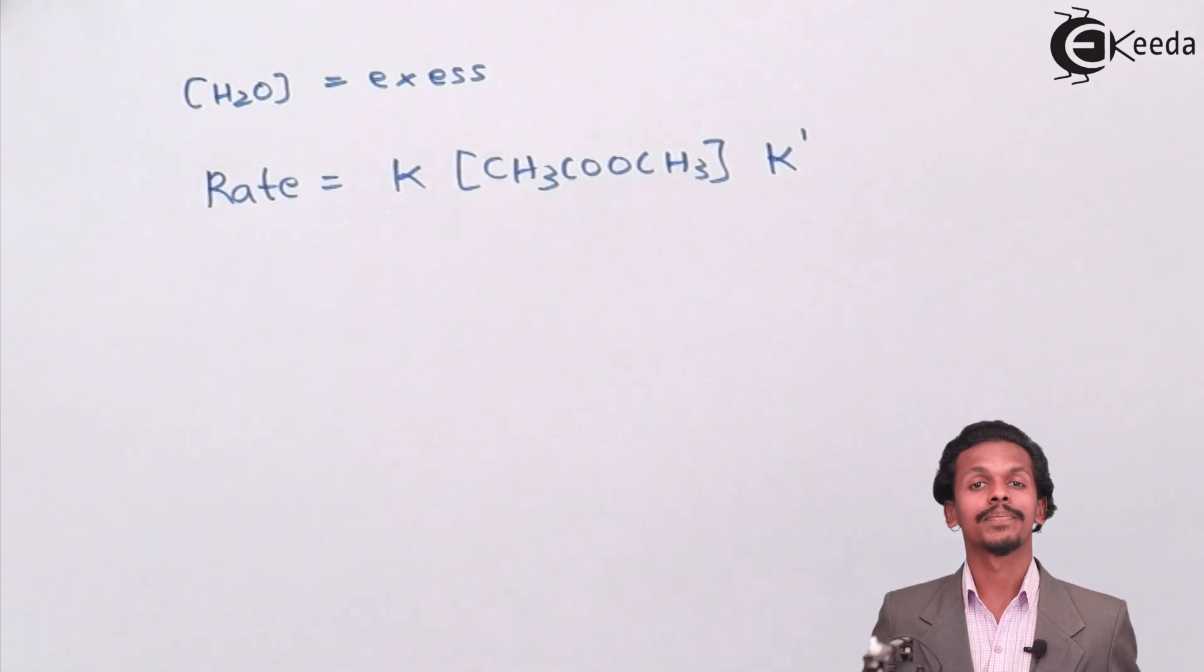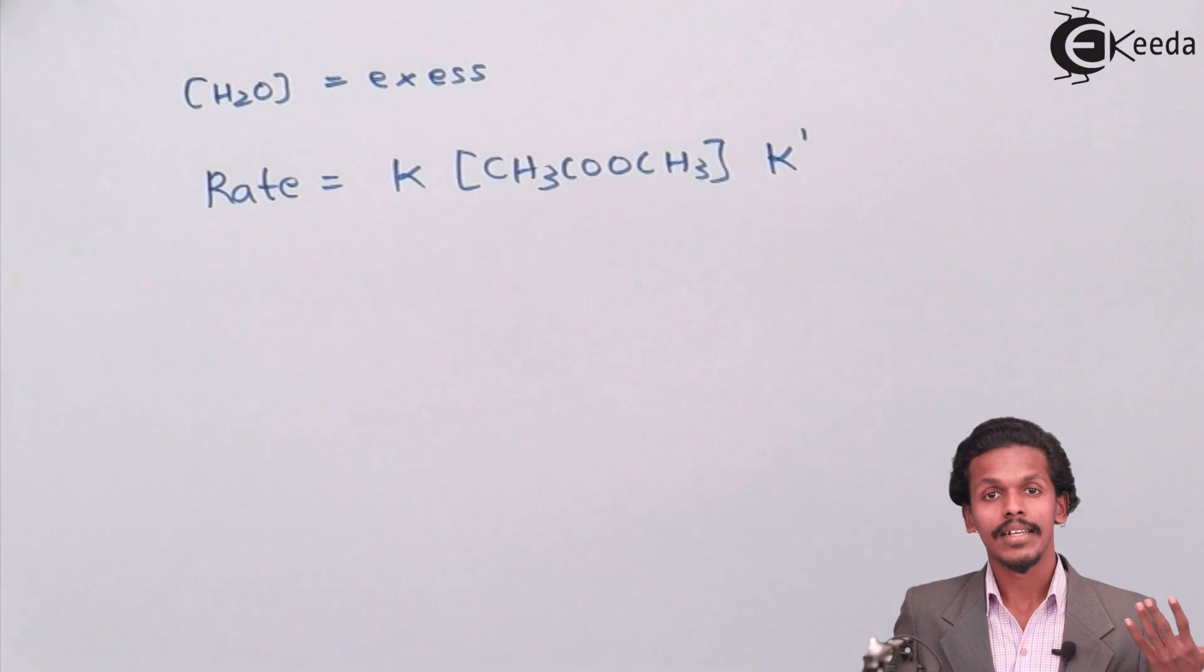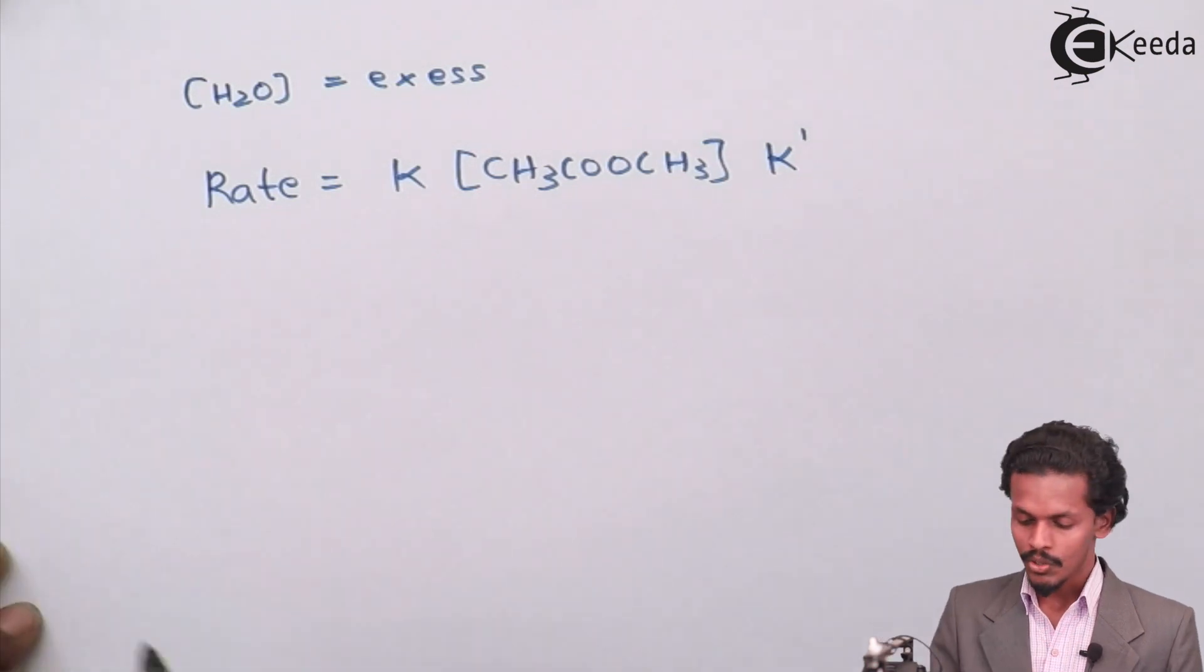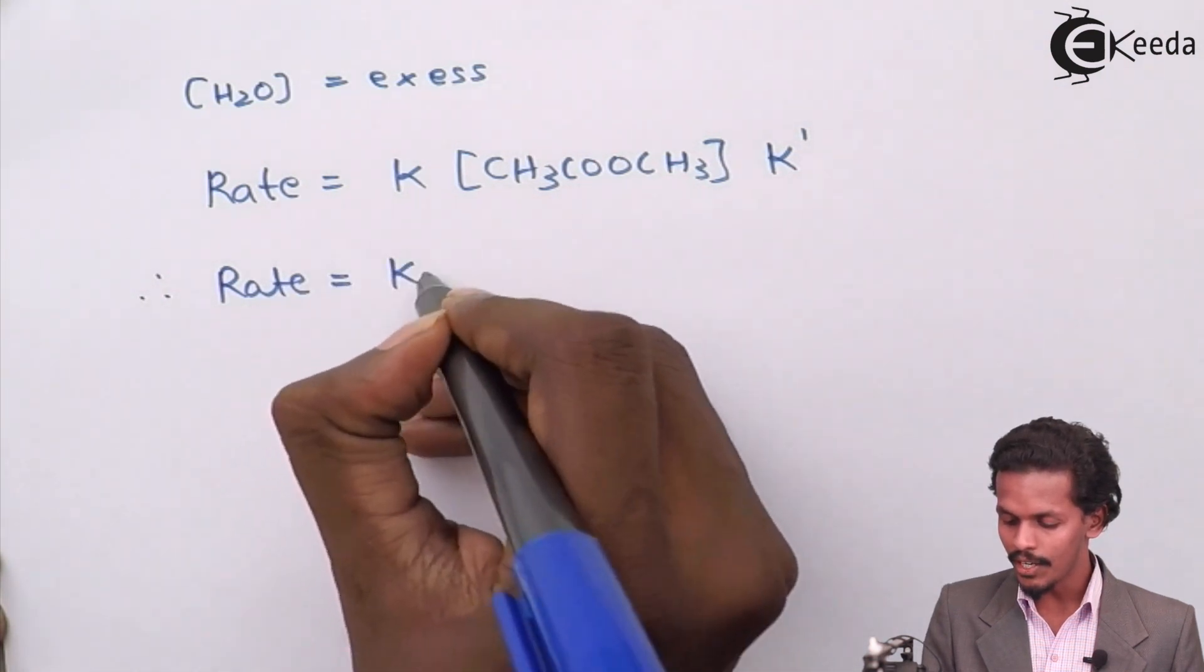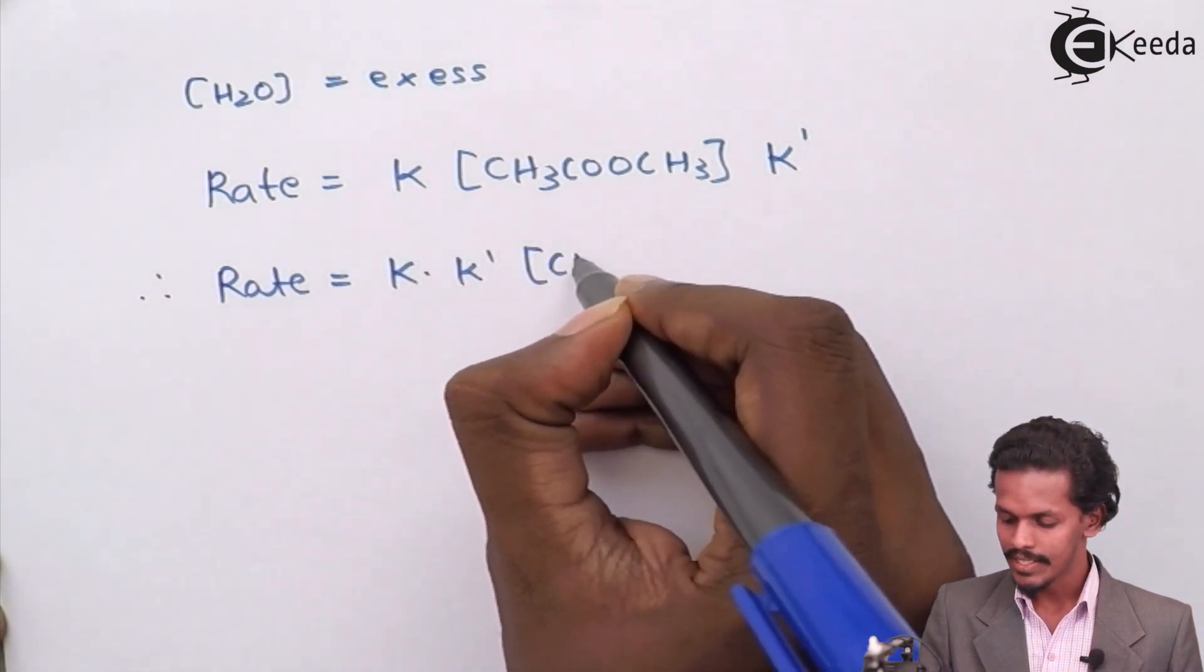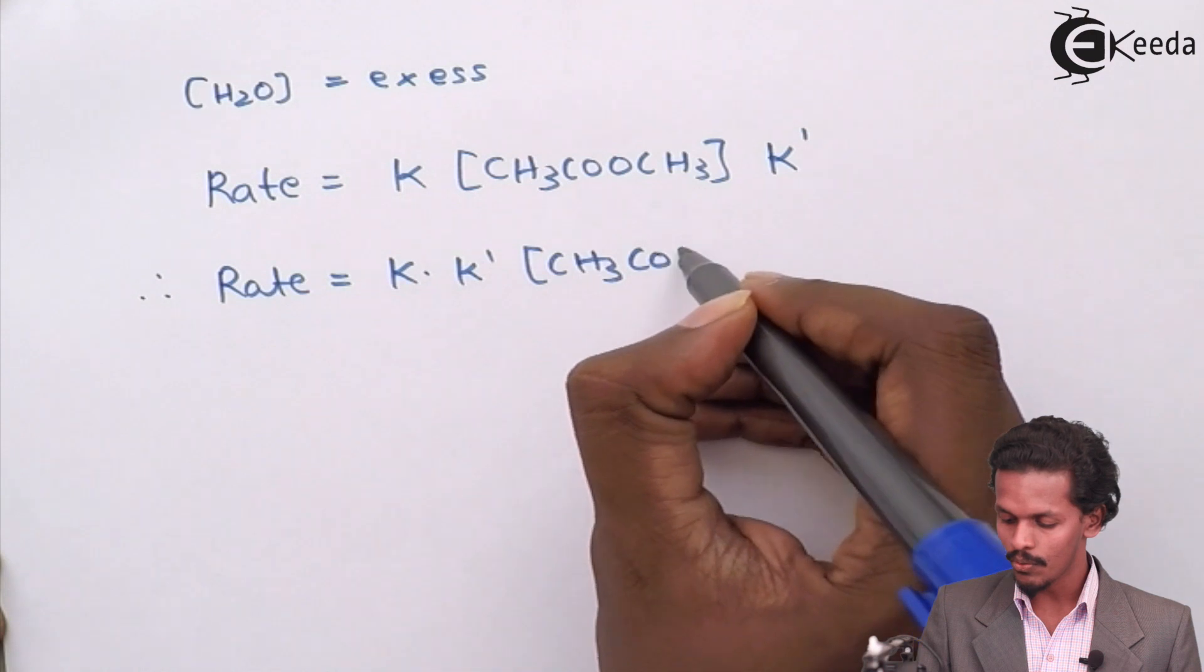Therefore, the rate will be now k times k' times CH3COOCH3, which is the concentration of reactant that I have represented.